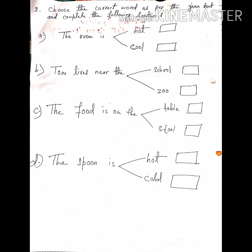Option A: The room is hot or cool. How is Tom's room? Hot or cool? Hot means warm and cool means cold. So how is Tom's room? Hot or cool? The room is cool. Remember children, Tom's room was cool. So you will mark cool. The room is cool, C-O-O-L.